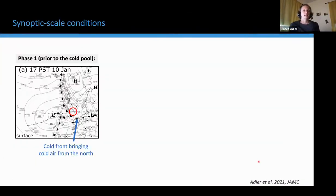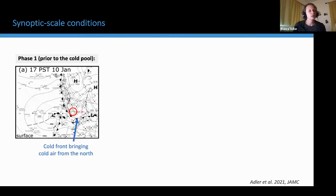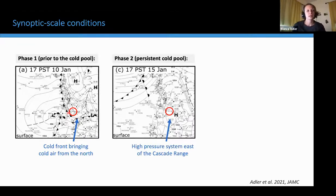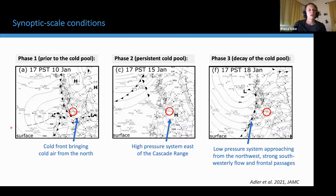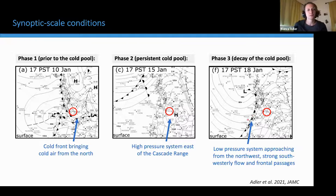Before we dig into the observations of the cold pool using ground-based instruments, just a brief overview of the synoptic-scale conditions. The red circle indicates the location of the Columbia River Basin. Prior to cold pool formation, a cold front brought cold air into the area from the north. Then a high-pressure system established east of the Cascade Range — conditions favorable for persistent cold pools — and this lasted for several days. Eventually, a low-pressure system approached from the northwest, bringing strong southwesterly flow and several frontal systems, which finally decayed the cold pool.